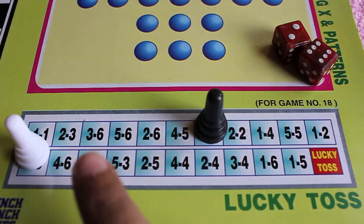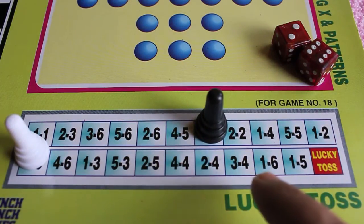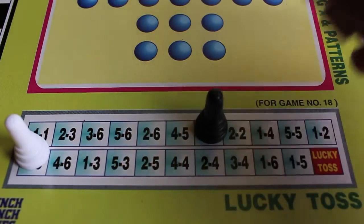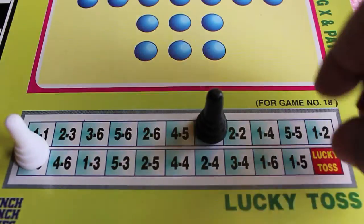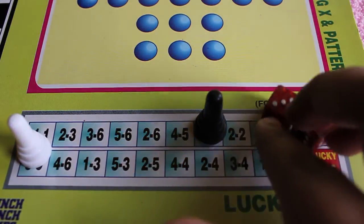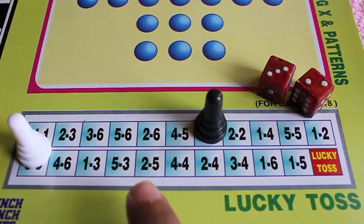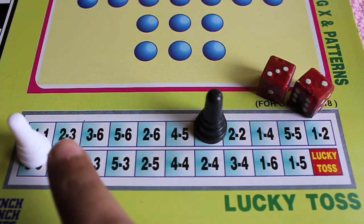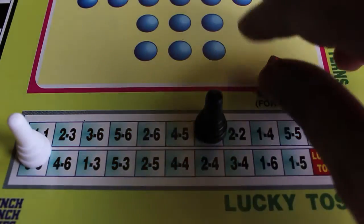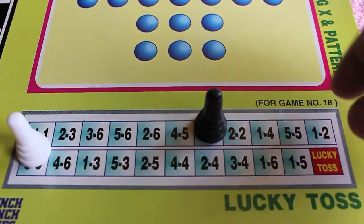And it's 6-2. As there is no 6-2 on the board, you skip. 3-2, again no 3-2 on the board, so you skip. There is literally no strategy in this game, it's fully luck. That's why it's called Lucky Toss.